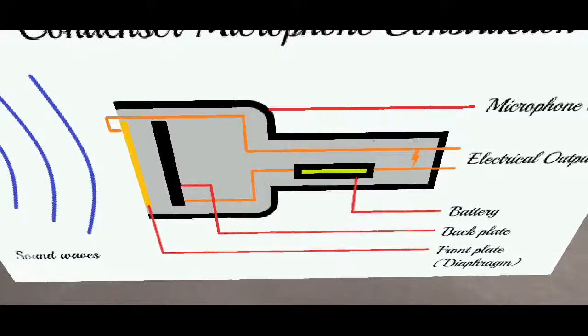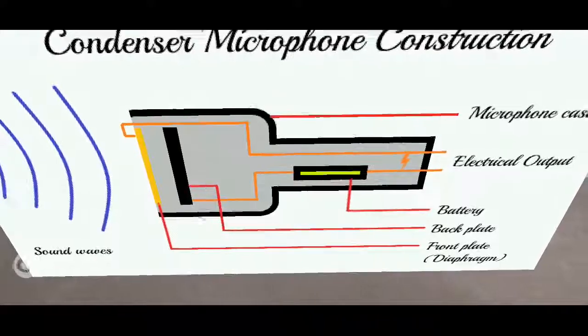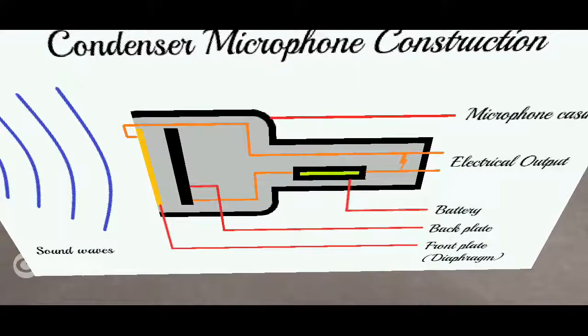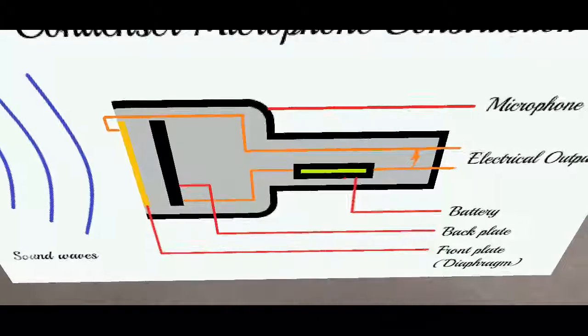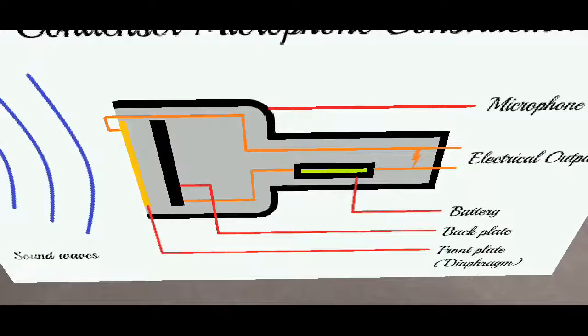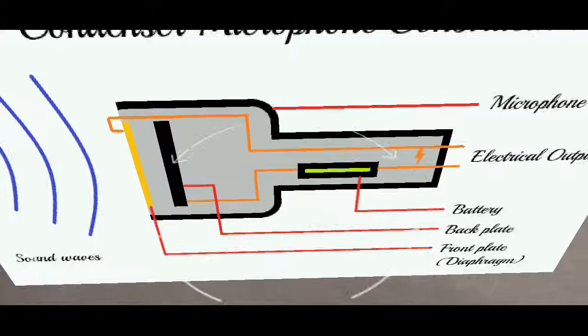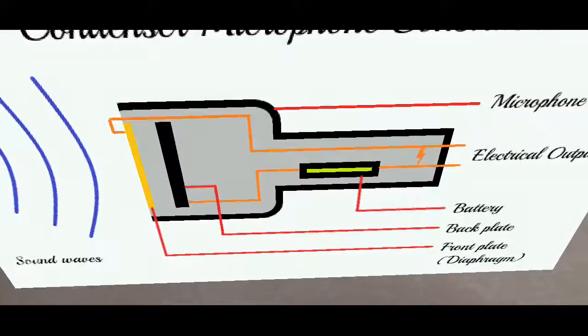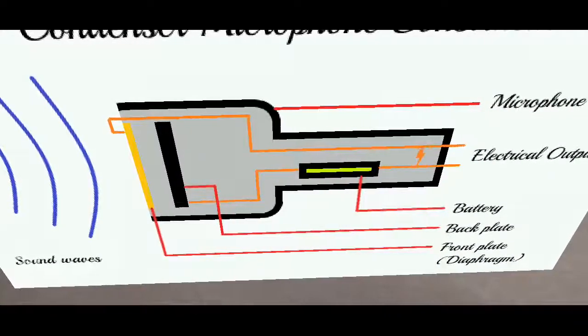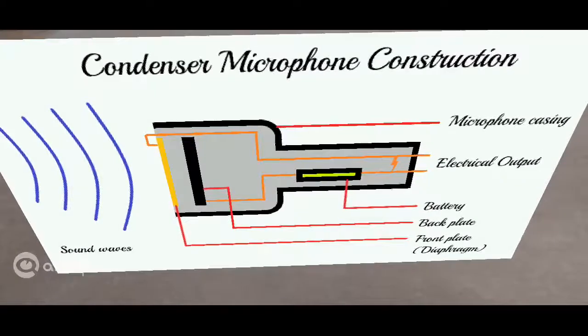In order for this microphone to work, it doesn't work without any power unlike the dynamic microphone. It does need a power source. So they require an electrical current to charge the plates. And this can be accomplished by two ways: either by using a battery or by using a phantom power. A phantom power is a power source to power this mic directly using the microphone cables.